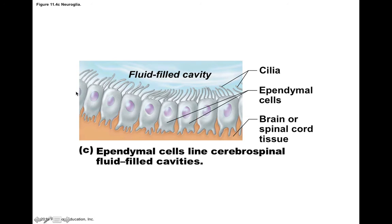Ependymal cells line up like an epithelium and line the fluid-filled cavities deep within the brain, appearing similar to a simple cuboidal epithelium. They transport substances from the fluid near blood vessels across their walls to produce cerebrospinal fluid. Their cilia wave and beat in a coordinated manner to circulate this fluid around the inside of the brain's spaces and also outside of the brain.